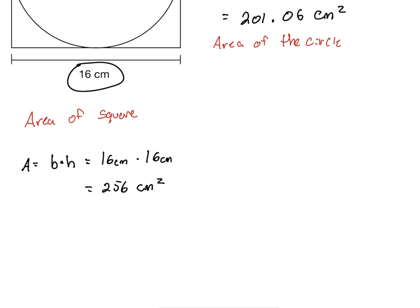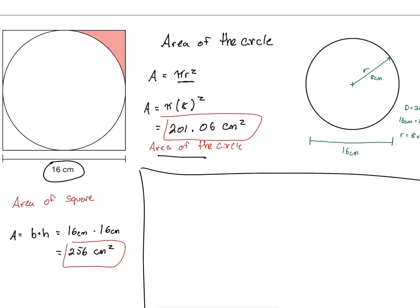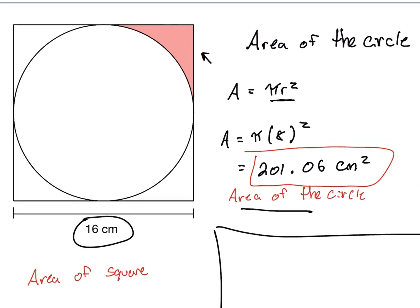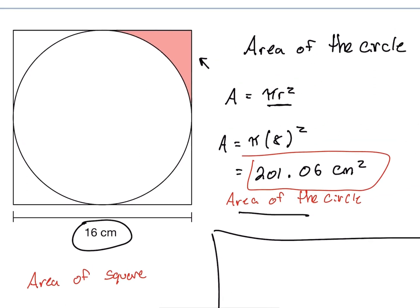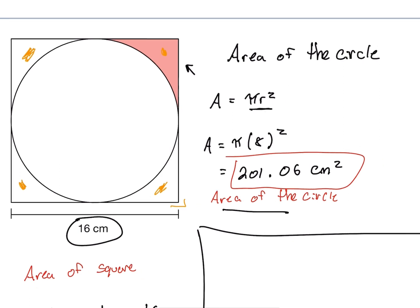So now we need to find the area of the shaded region up here in the top right corner. To do this, if we take a look at our diagram, we can see that the total area of those shaded regions would be the area of the square minus the area of the circle. These are the blank spaces around the outside — think of it like we're removing the area of the circle from the area of the square.